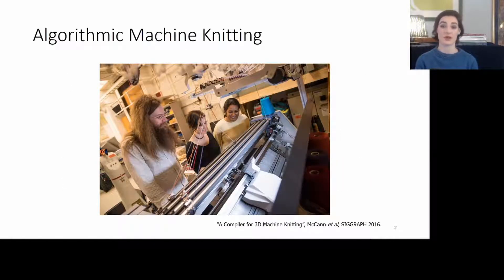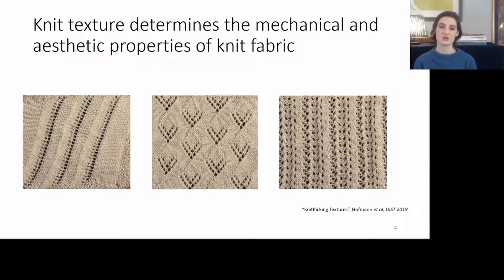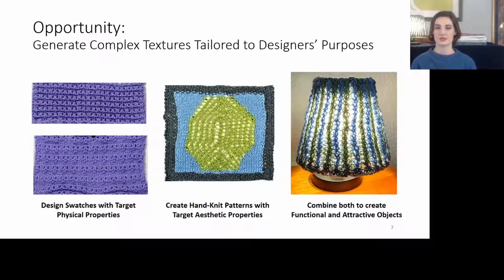We contribute to the burgeoning field of algorithmic machine knitting, which is largely focused on creating knitted shapes like a Stanford bunny or generating soft-actuated objects like this lampshade. But we contribute to the field of knit texture, which determines the mechanical and aesthetic properties of a knit fabric, largely defined by programming languages like Knitspeak, which are based off of the hand knitting instructions shown here. Knit textures present an interesting opportunity to generate knitted objects with target physical and aesthetic properties.